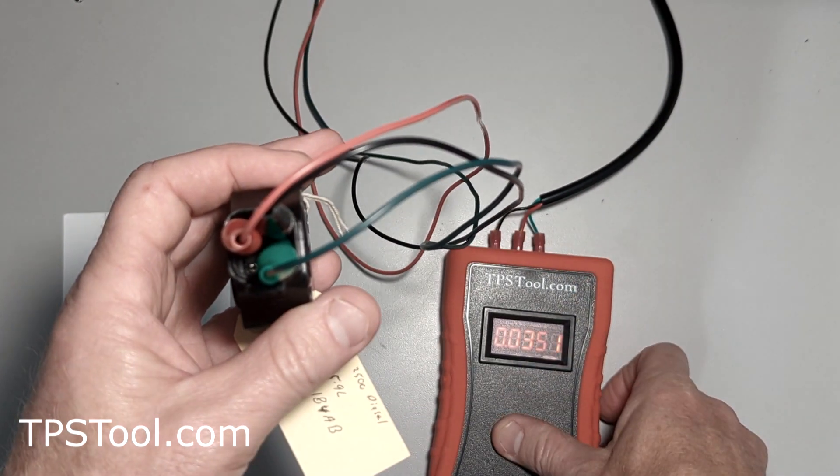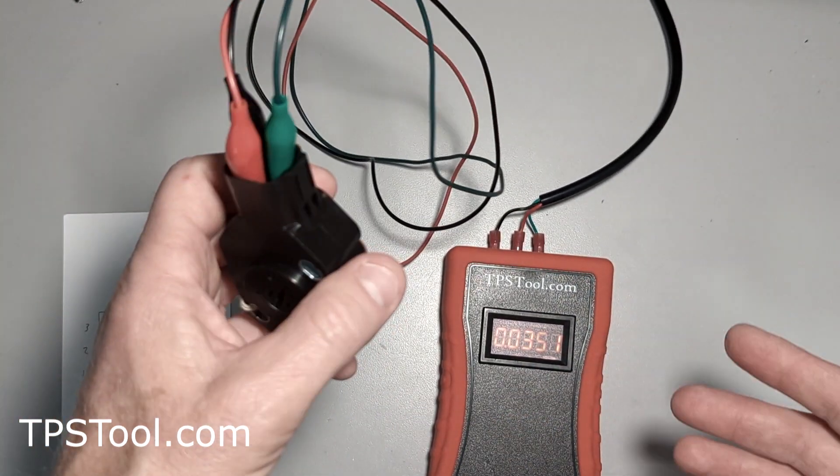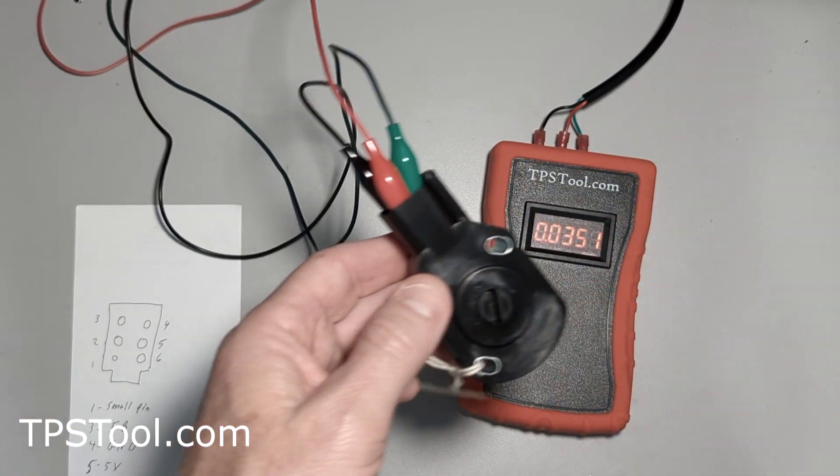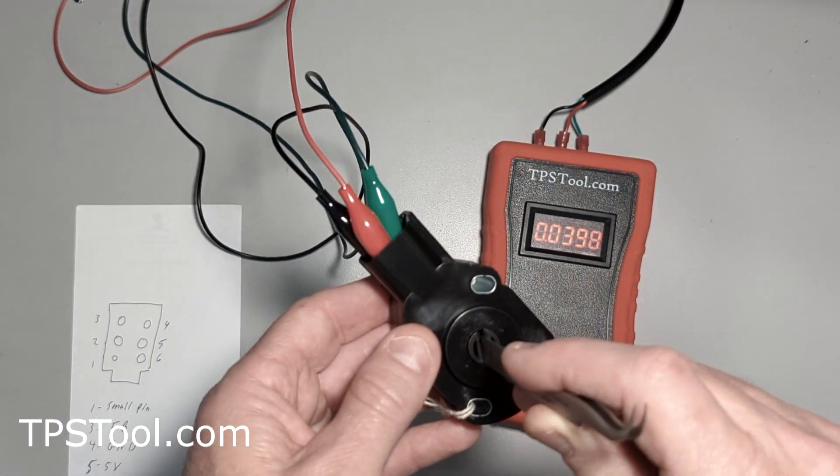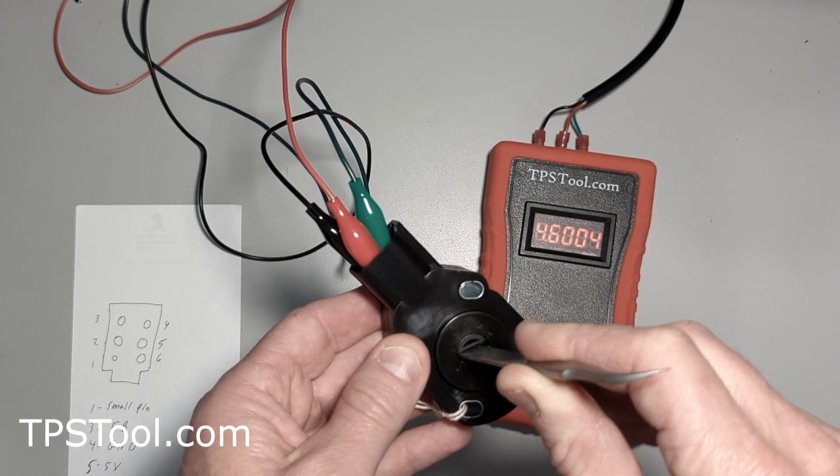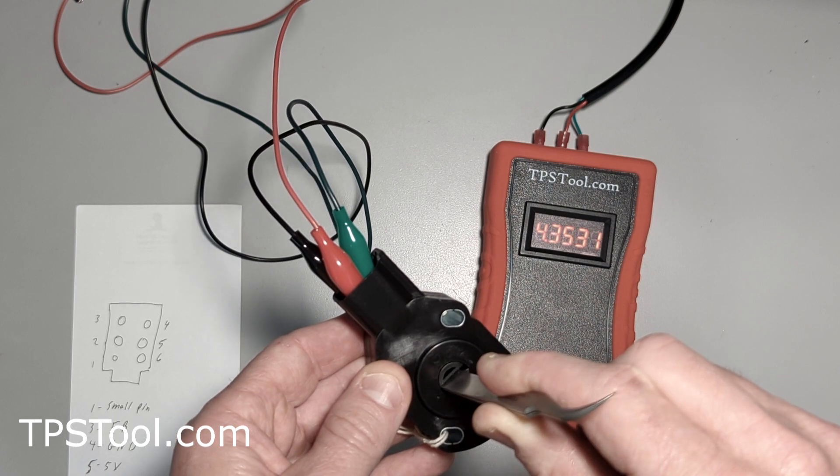If we got it right, turn this on. There we go. There's the reading, completely not attached to a throttle body or anything. As I turn the throttle position sensor, you'll see the numbers change. There we go. There's full throttle, and it'll come all the way back down.